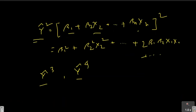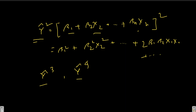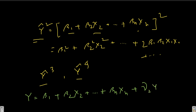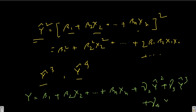When doing the Ramsey RESET Test, we take powers up to 4. The final equation is: y = beta1 + beta2*x2 + ... + beta_n*x_n + gamma2*ŷ² + gamma3*ŷ³ + gamma4*ŷ⁴. This is the equation we will use for the regression in the RESET test.